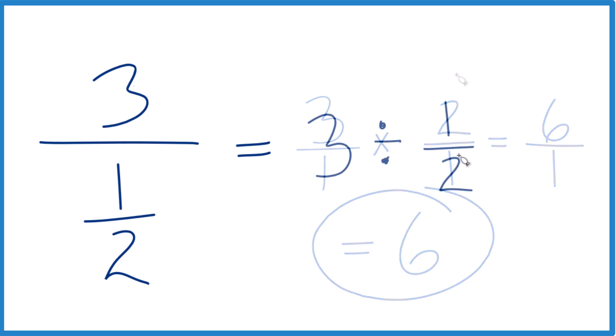So remember, we took our fraction here and we took the reciprocal of the fraction. Then we changed division to multiplication. Put the 3 over 1, multiplied across, got our answer, and then simplified it like that.